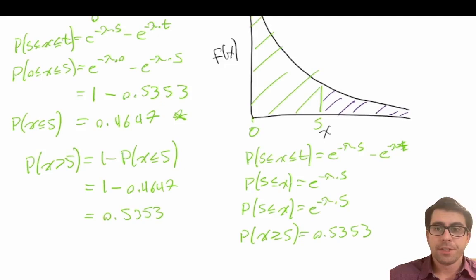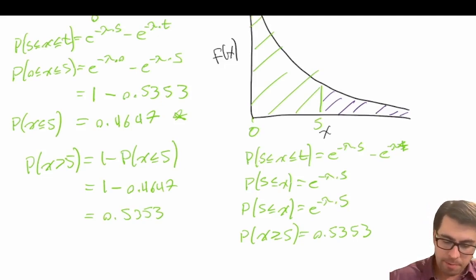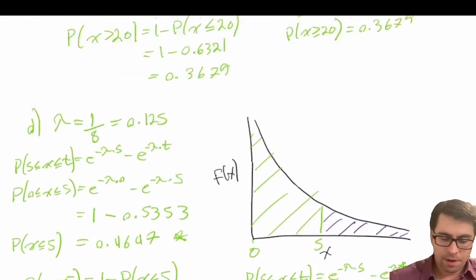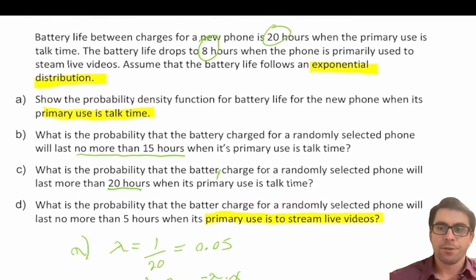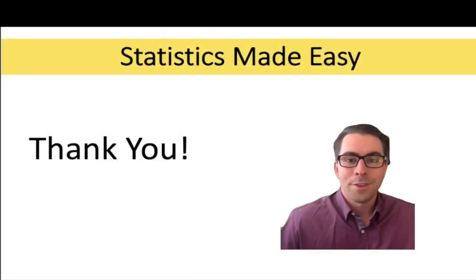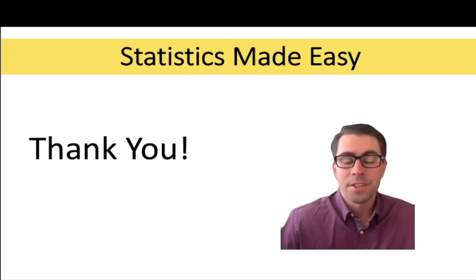All I'm showing here is that there are two ways to solve this: one is to take the complement, and the other is to remember the shortcut — the probability that x is greater than some value s is just e to the power of negative lambda times s. We've completed all of our questions and learned more about how to properly use the exponential distribution. If you found this helped make statistics easy, consider liking the video and subscribing to the channel.